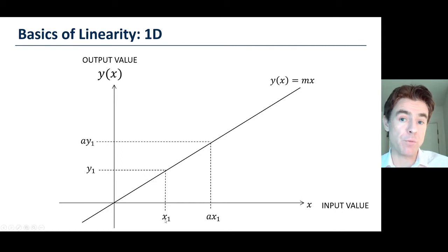In other words, we could just take the output from x1 and scale that, and that predictably gives us what the output would be for a times the input x1. If we put in a different input, x2, we'd get some output y2.